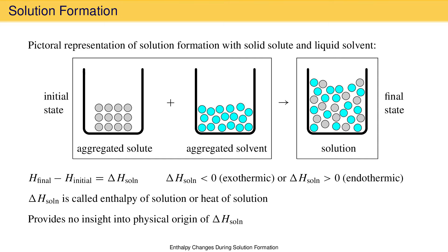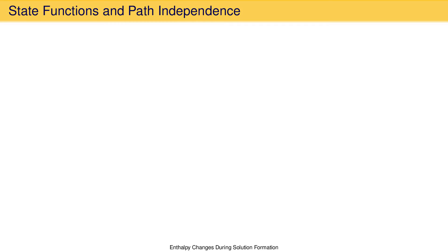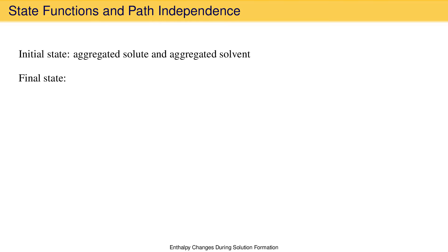That's a question we want to try to answer: why are some heats of solution negative and some positive? To make any progress answering this question, we have to move beyond thinking about solution formation as a single step process. Solution formation in a single step involves going directly from the initial state — consisting of the aggregated solute and aggregated solvent — to the final state consisting of the solution. In that single step, the solution is formed.